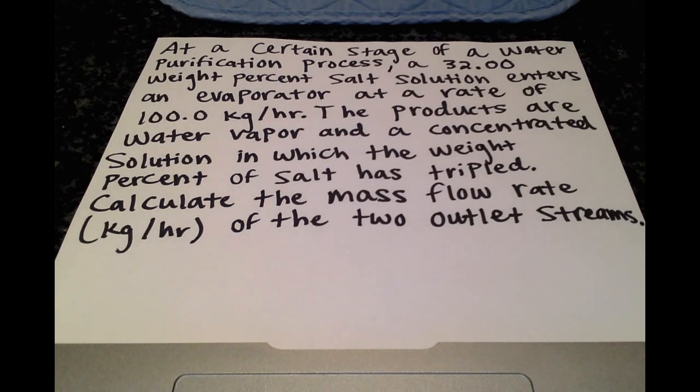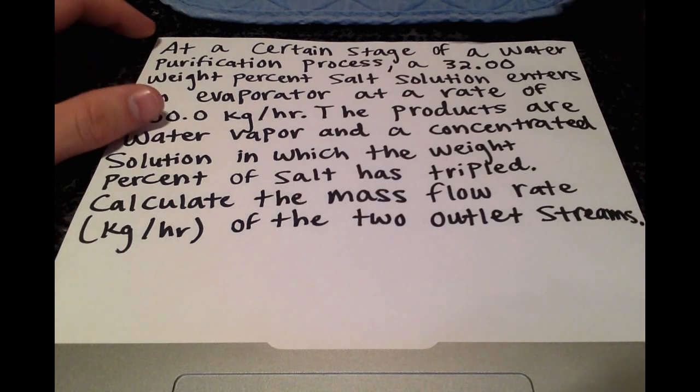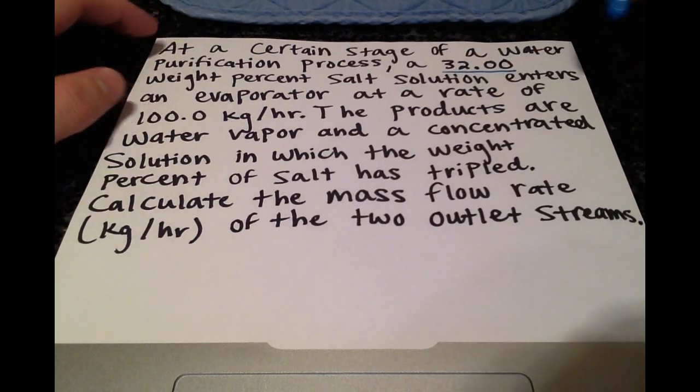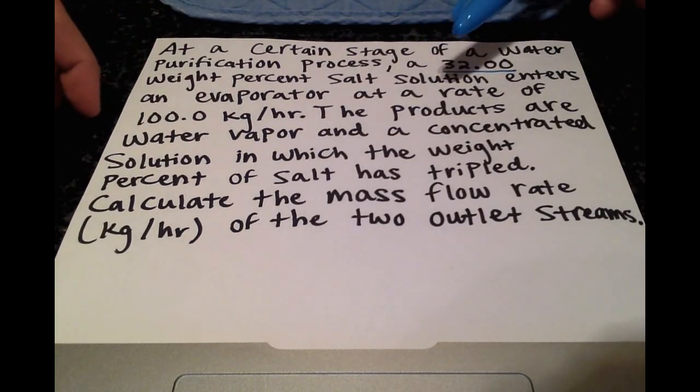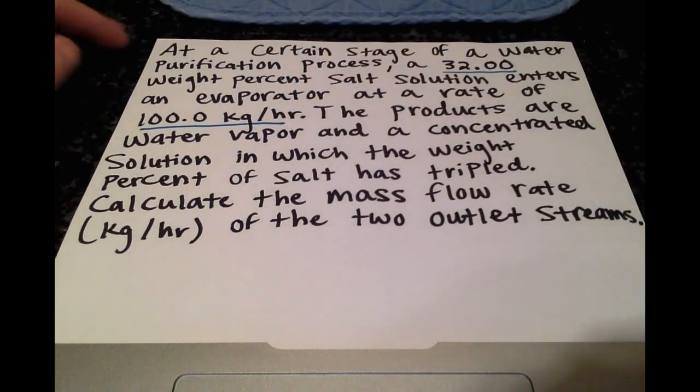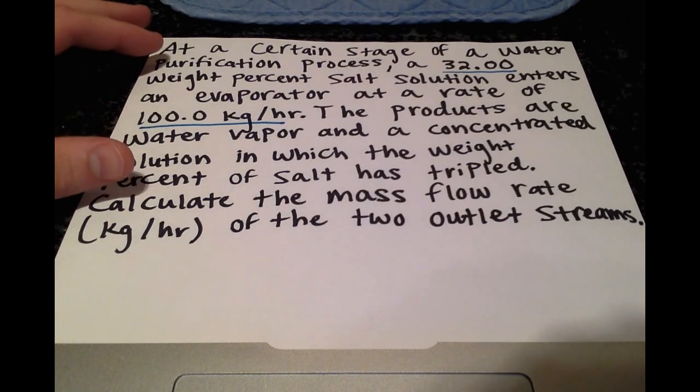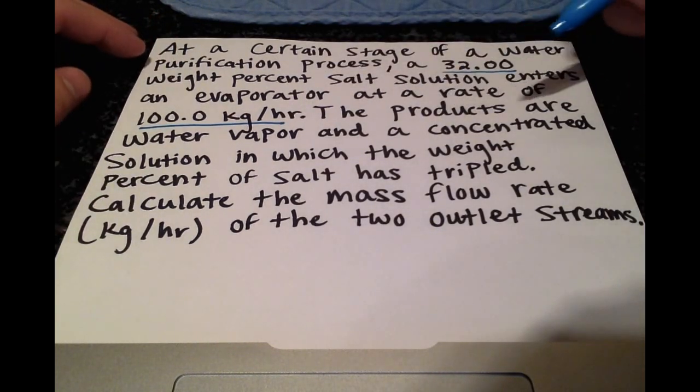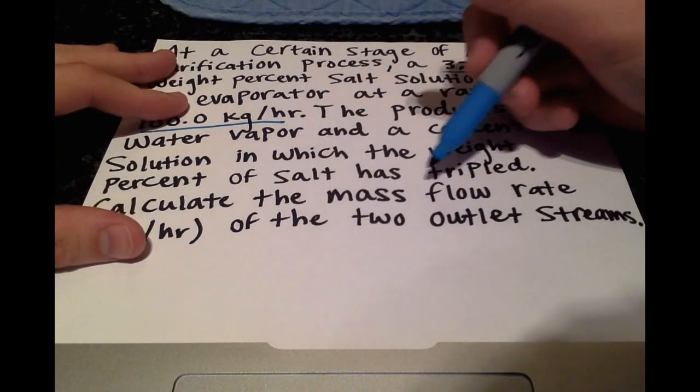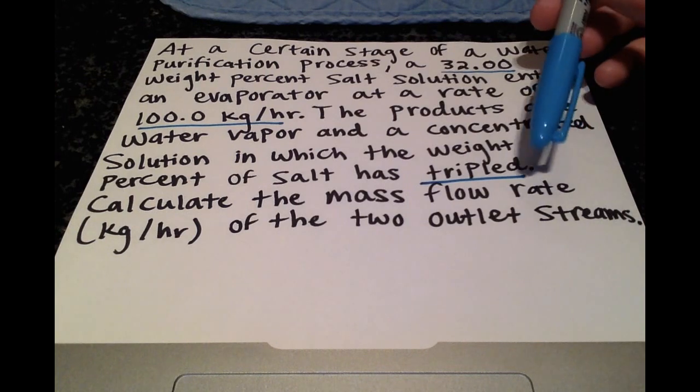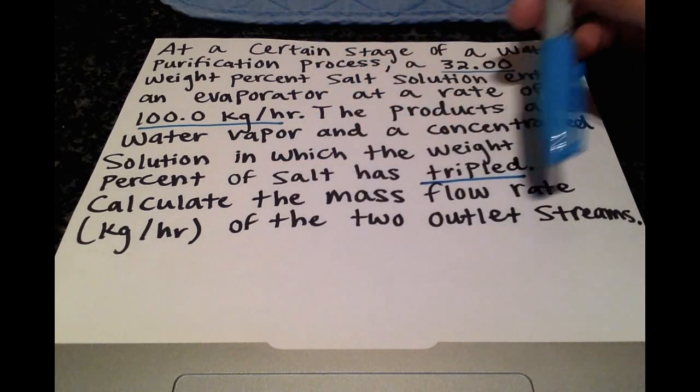So let's look at the problem. At a certain stage of a water purification process, a 32 weight percent salt solution enters an evaporator at a rate of 100 kilograms per hour. The products are water vapor and a concentrated solution in which the weight percent of salt has tripled. Calculate the mass flow rate in kilograms per hour of the two outlet streams.